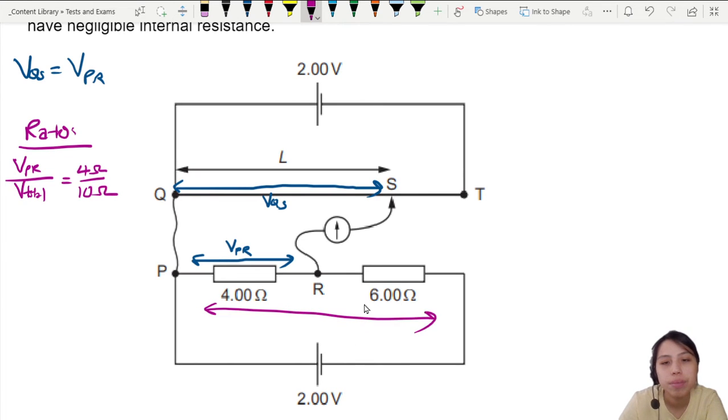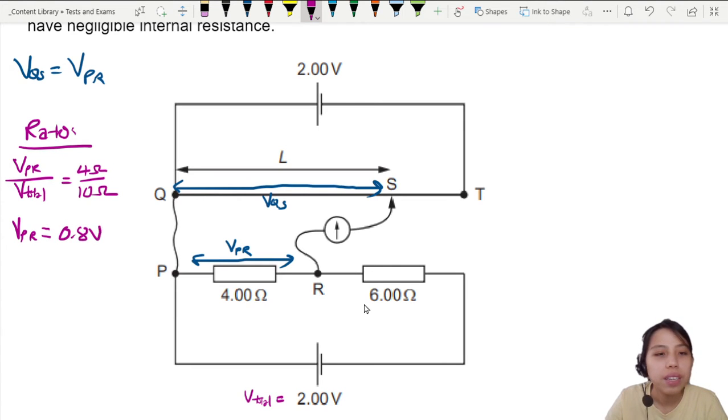So if you do this ratio, you would find this is V total for the lower loop. You'll find that VPR equals to, what did I find for VPR? 0.8, I think. So this is 0.8 volt. First step accomplished. Now we can use this.